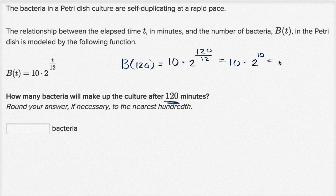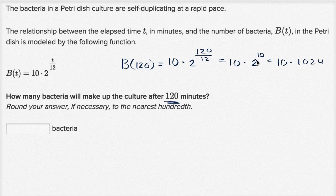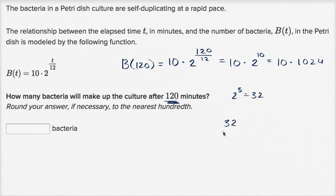So this is going to be equal to 10 times—two to the 10th power is 1024. If you want to verify that, you could say, well, 2 to the 5th is equal to 32, and so 2 to the 10th is going to be 2 to the 5th times 2 to the 5th. And 32 times 32 is...